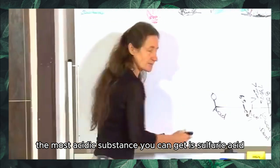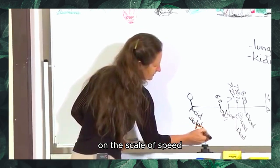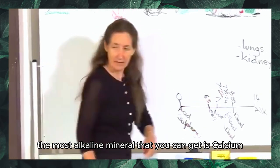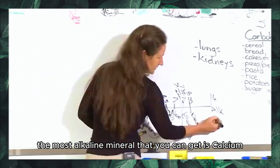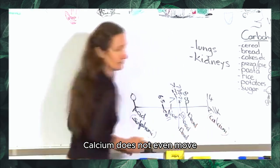The most acidic substance you can get is sulfuric acid. On the scale of speed, sulfuric acid travels at the speed of light. The most alkaline mineral that you can get is calcium. And on the scale of speed, calcium does not even move.